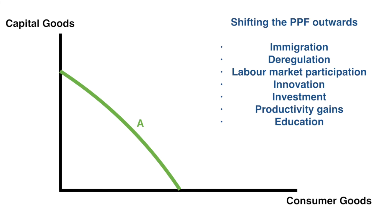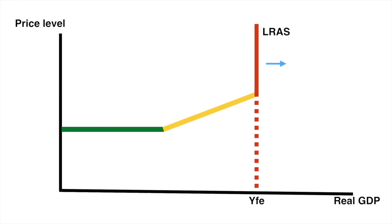A change in these factors that would benefit businesses will shift a country's PPF outwards, as can be seen in the movement from PPF-A to PPF-B. The very same factors that shift out a country's production possibilities curve are the factors that shift out the LRAS, which represents the productive potential of an economy.